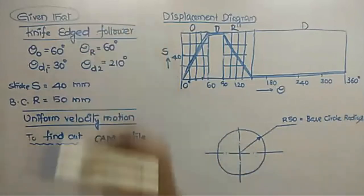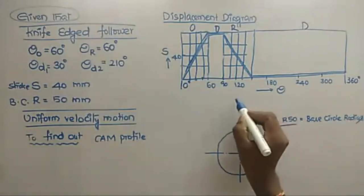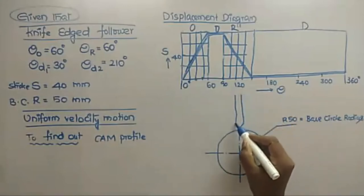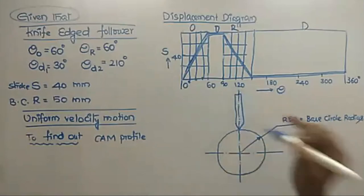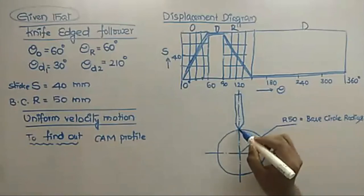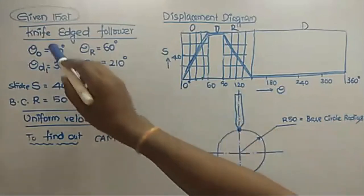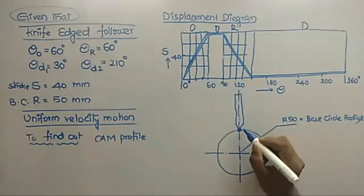Divide the 60-degree outstroke sector into the same 4 equal parts as on the displacement diagram, and draw radial lines through each division. Starting from the base circle, mark point A on the follower axis at θ = 0 degrees. Transfer displacement distances from the diagram: point 1A from the diagram is marked as 1'A' on the corresponding radial line, measured from the cam center.